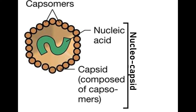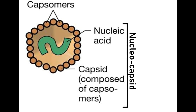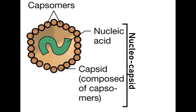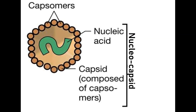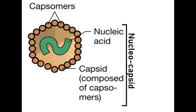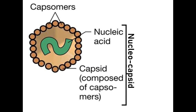Viruses are non-cellular, which means they are biological entities that do not have a cellular structure and are not made up of cells. Their structure is totally different from a cell. They consist of a nucleic acid which is surrounded by a protein coat called the capsid. The capsid is made up of different small subunits of proteins called capsomeres.